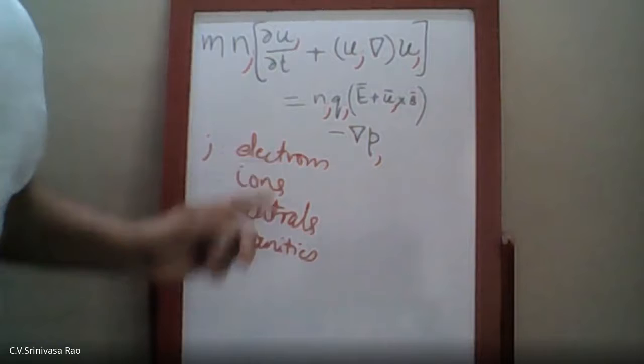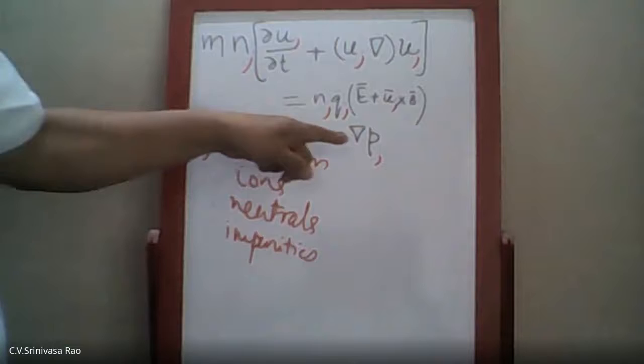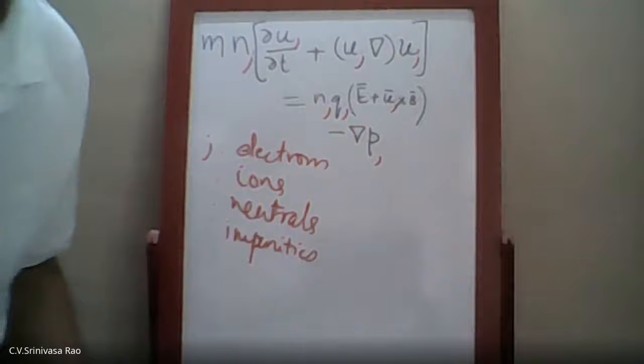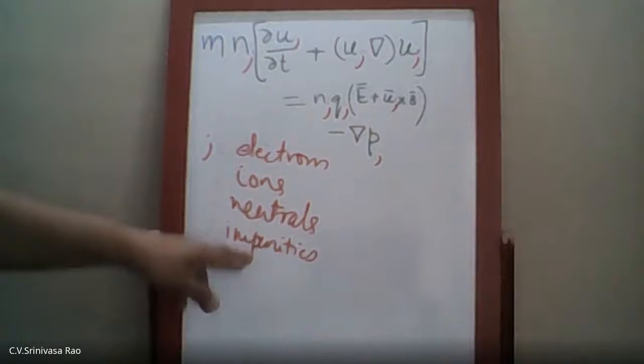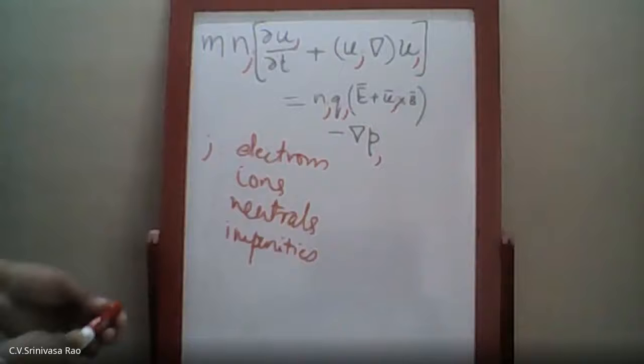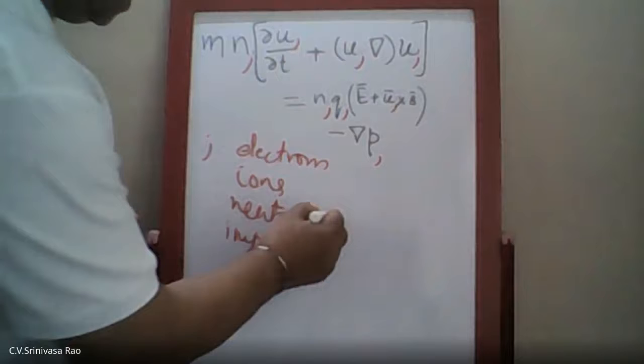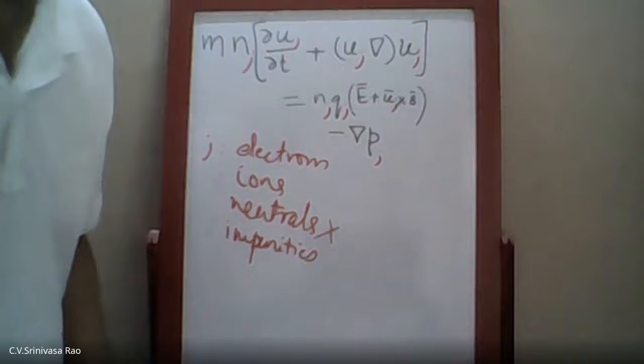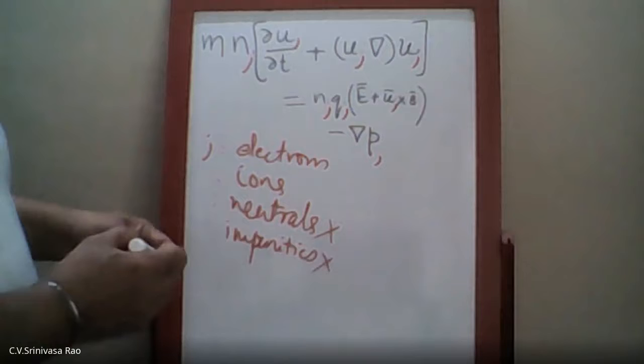You have to write this momentum equation now for all the species which make up the whole plasma. In plasma, we have electrons, ions, neutrals which are not ionized, and then there are certain impurities. Let us assume that the plasma is fully ionized, so you don't have neutrals, and also we'll say that the amount of impurities are very insignificant. So you only have to write equations for electrons and ions.